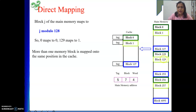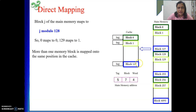Similarly, block 1, block 129, block 257 - whose modulus result is 1 - will be mapped to block number 1 in the cache. Like this, for every block till 127, each of them will map to blocks 0 to 127. Block 127 will be mapped to block 127 of the cache.